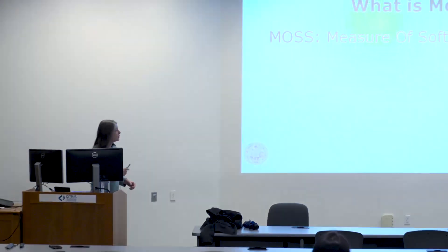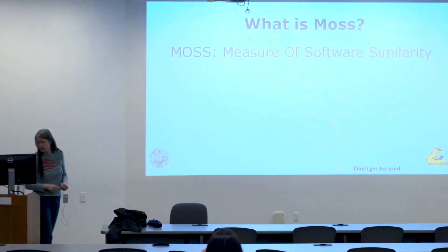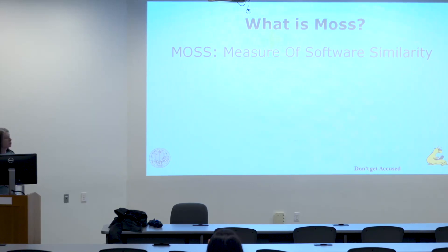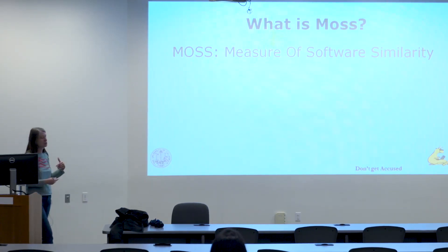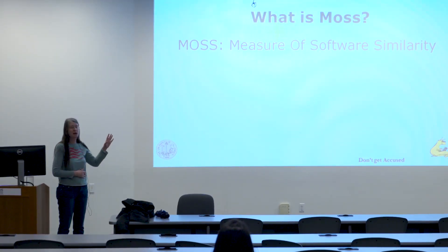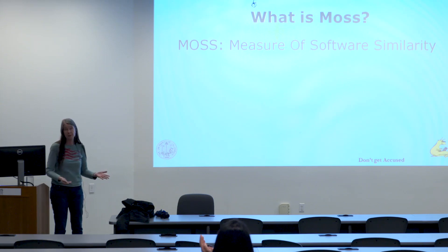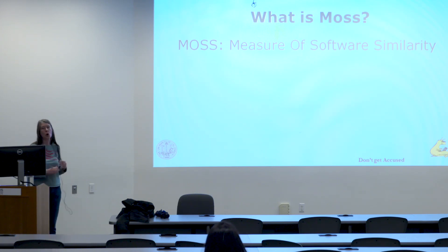Well, what we use in a lot of our classes is MOSS, which is a measure of software similarity. It comes out of Stanford. And it's an automatic system for determining the similarity of programs. And people use it in programming classes, but it's not the only system. For example, if you've been in one of Narges Norouzi's classes and you've used Stepik, Stepik has its own code comparator built into it. It isn't MOSS, but it works like MOSS. So if you know about MOSS, you know about how other systems work.